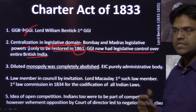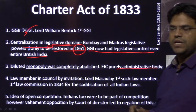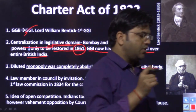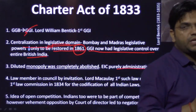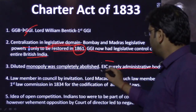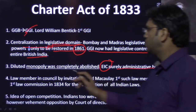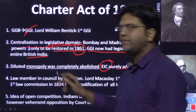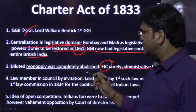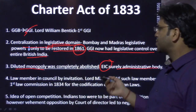The East India Company is now completely made into an administrative body. They were to govern on behalf of Her Majesty, not as a sovereign body. The political sovereignty is no longer with the EIC — their responsibility is only to look after administration. This diluted monopoly in tea and trade with China is also completely abolished.